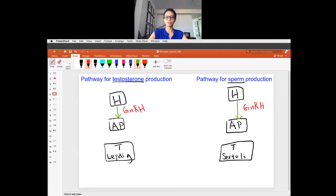GnRH stimulates the pituitary gland in both sides. But in the hormone responsible for testosterone, we're going to be looking at the release of the hormone LH. And in the sperm side is FSH, follicle-stimulating hormone.